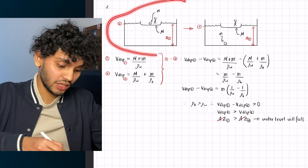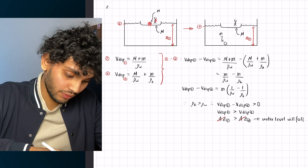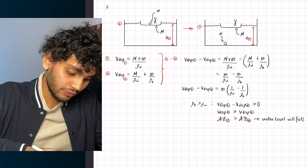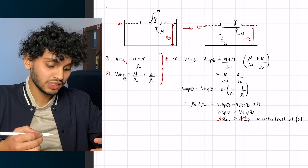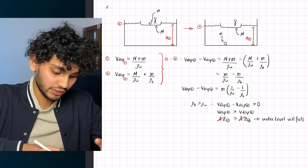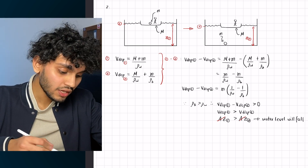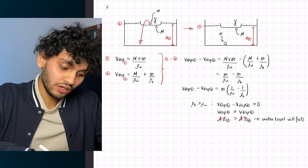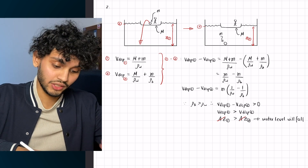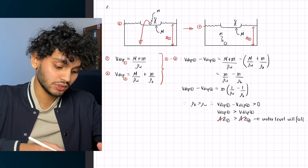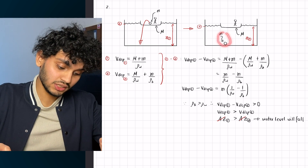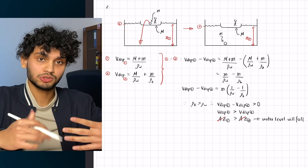To answer this, draw a diagram of the first scenario: you have yourself, the ball, and the boat. The mass of the boat is big M and the mass of the ball is little m. In the beginning, the volume displaced is the sum of the two masses, big M and little m, divided by the density of water. In the second scenario, you throw the ball overboard, so the volume displaced has two separate terms: big M divided by the density of water for the boat, plus little m divided by the density of the ball.